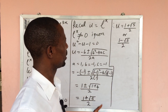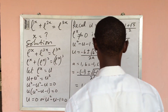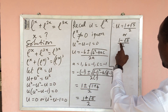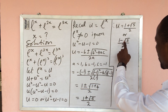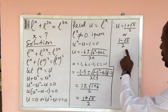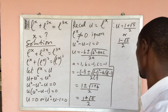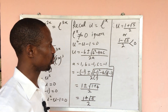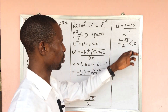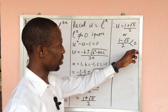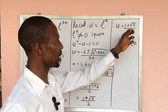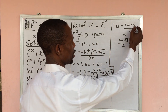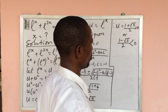Looking at these two solutions carefully, the second one — 1 minus root 5 all over 2 — will be less than zero. Since e to the power of x cannot be negative, this solution does not work and we must ignore it. We take only the first solution, which is greater than zero.